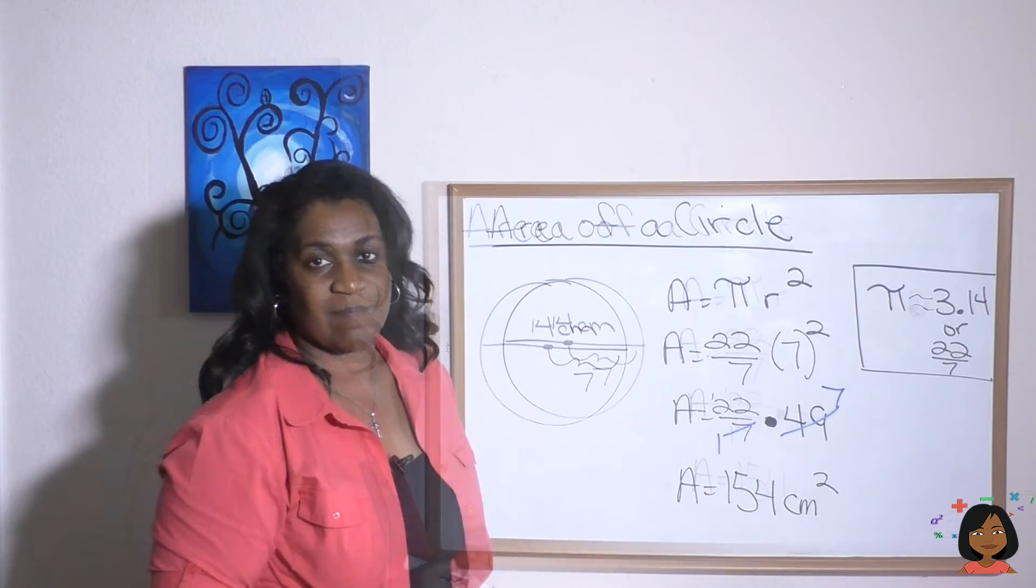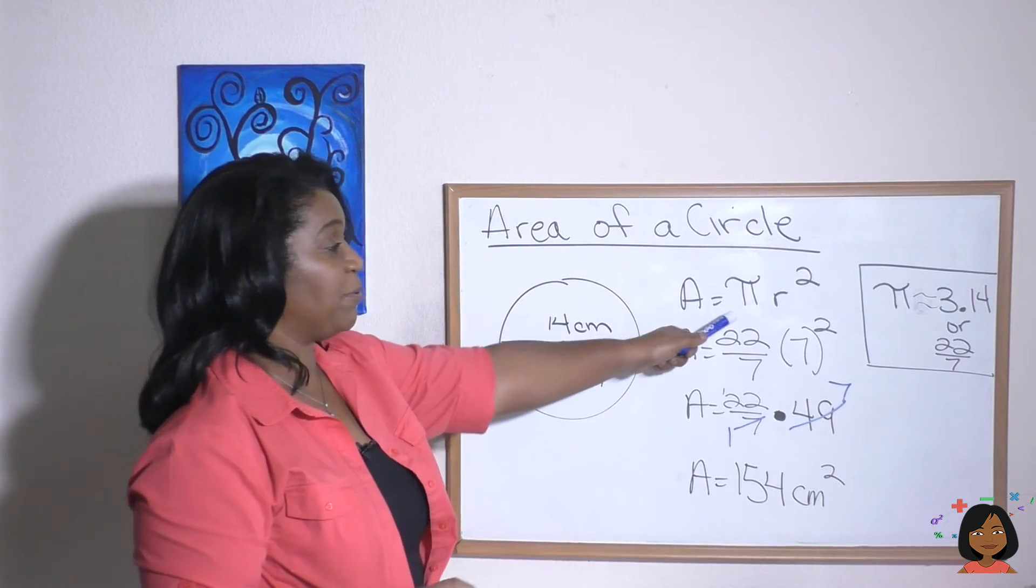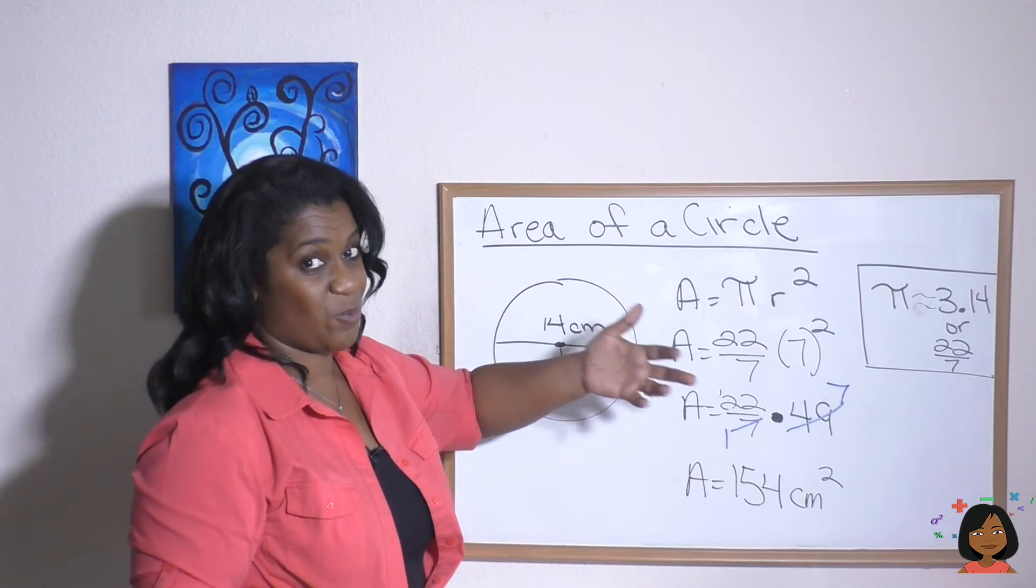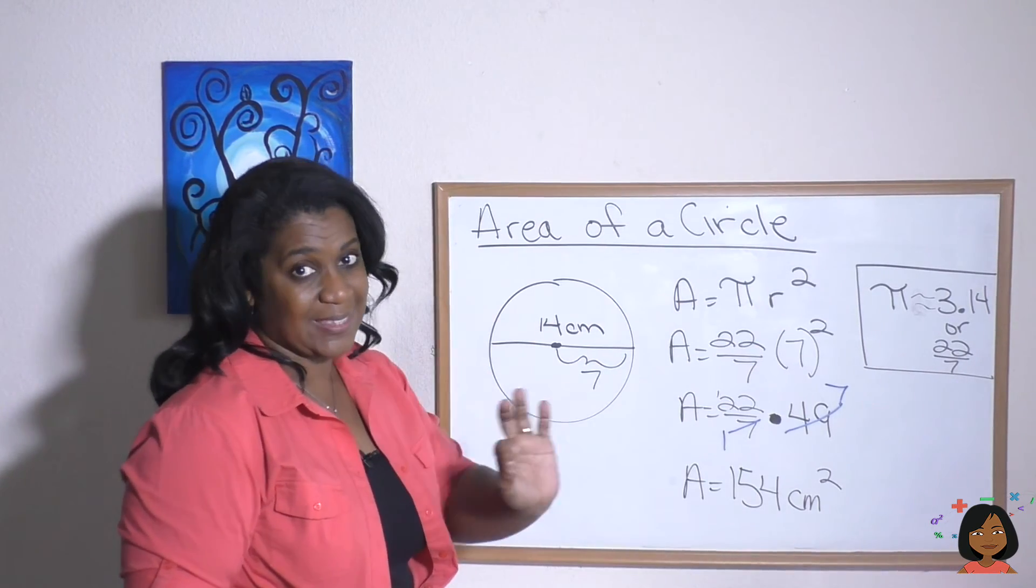And that's it. It's really that simple. Just plug and play, put in the formula. We will tell you whether or not you should use 3.14 or 22 sevenths and make sure it's the radius you're squaring, not the diameter.